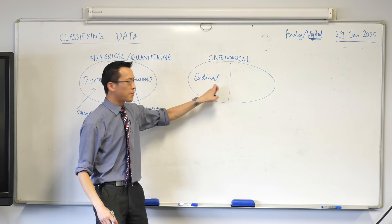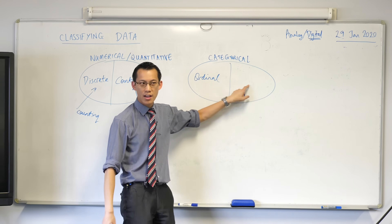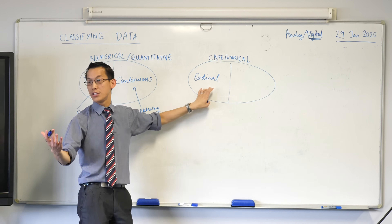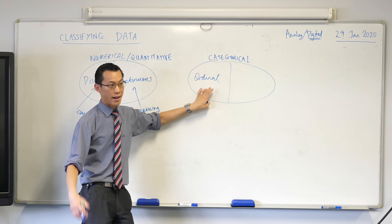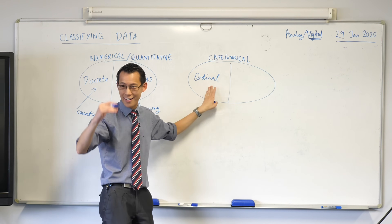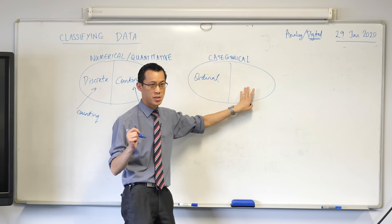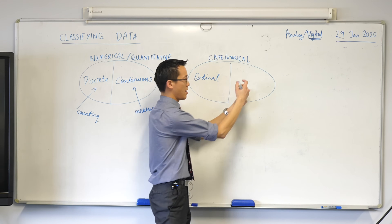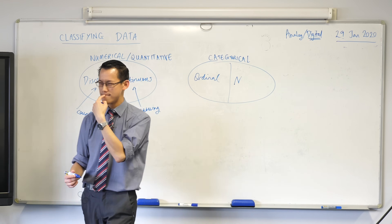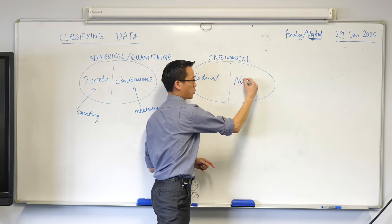Now I'm going to return to ordinal in a second, but let's quickly get the other one. When it's not any kind of order - like what color is your hair? - that's not something you can put in a nice order. This other type starts with N. It's fairly uncommon to talk about this word - nominal.